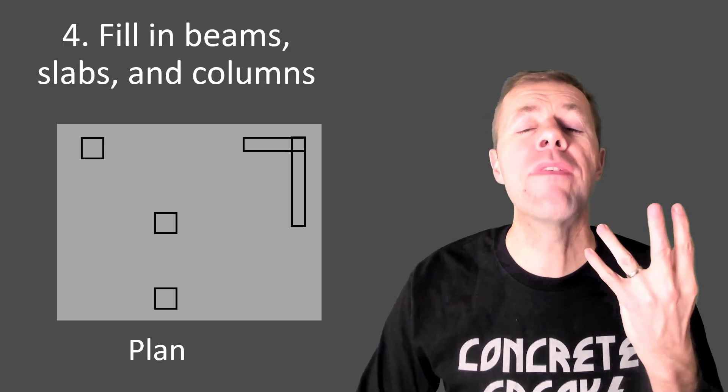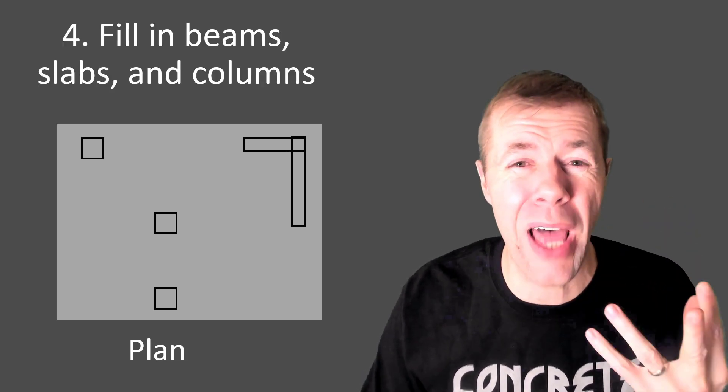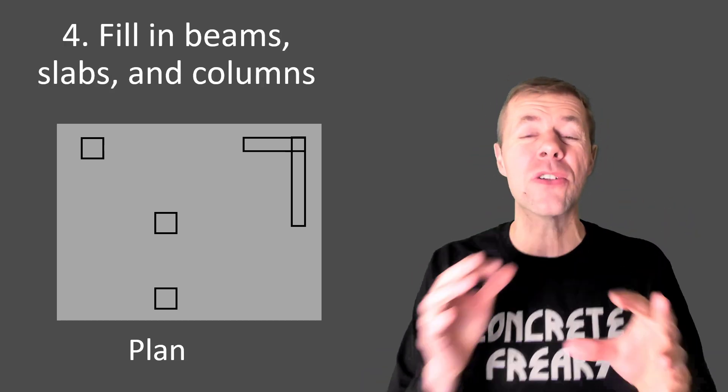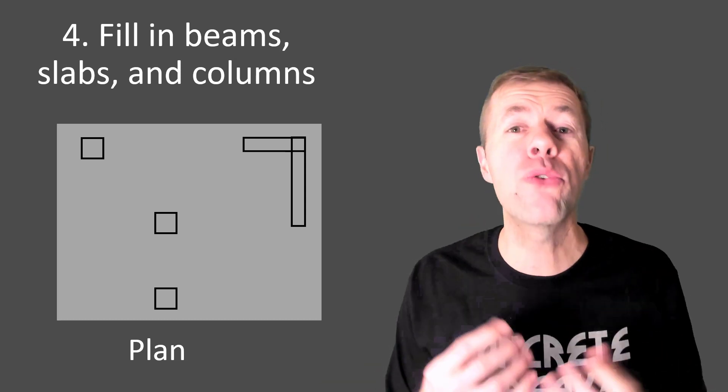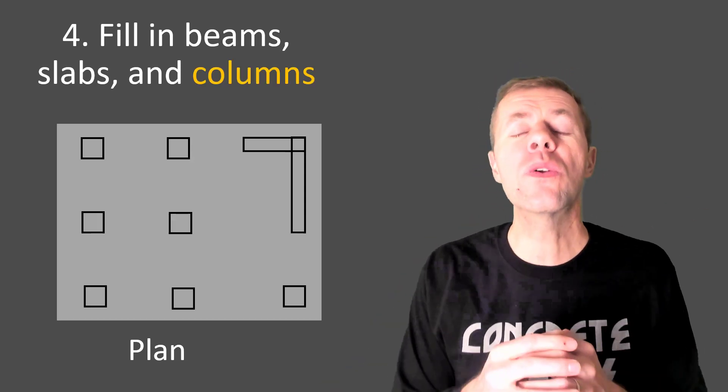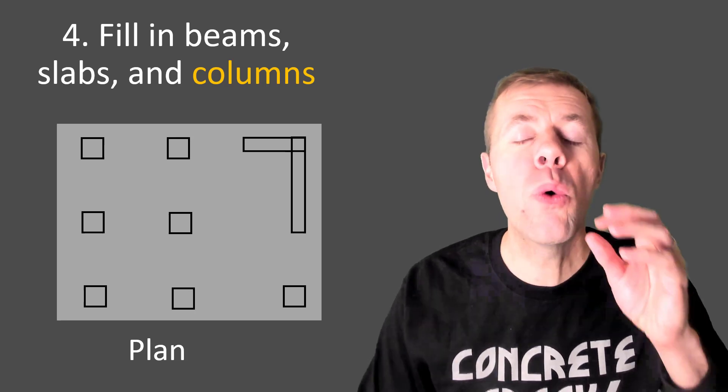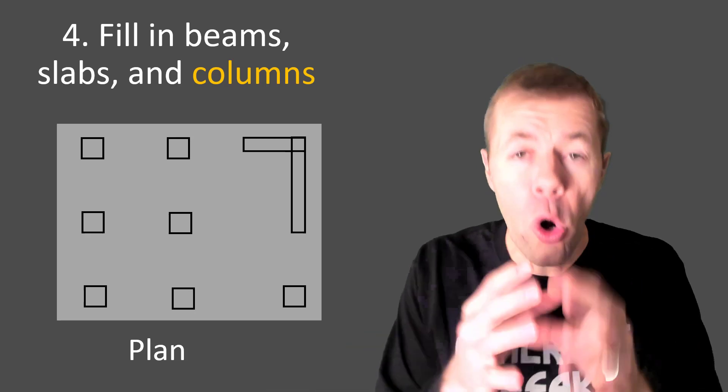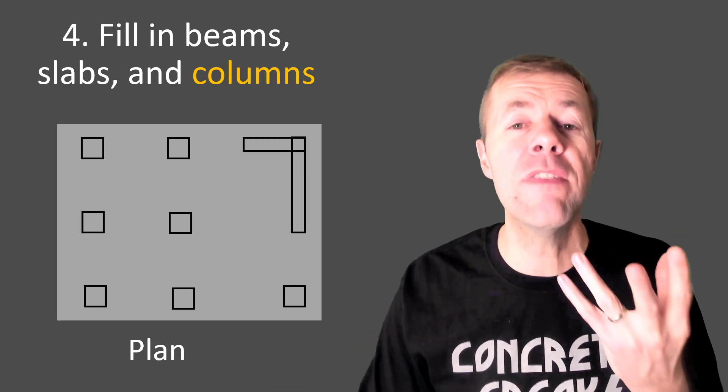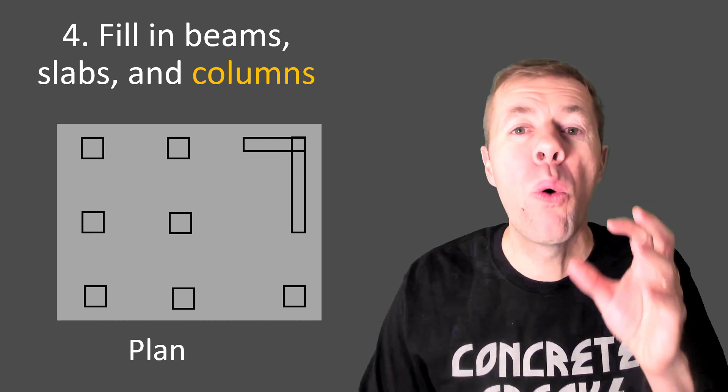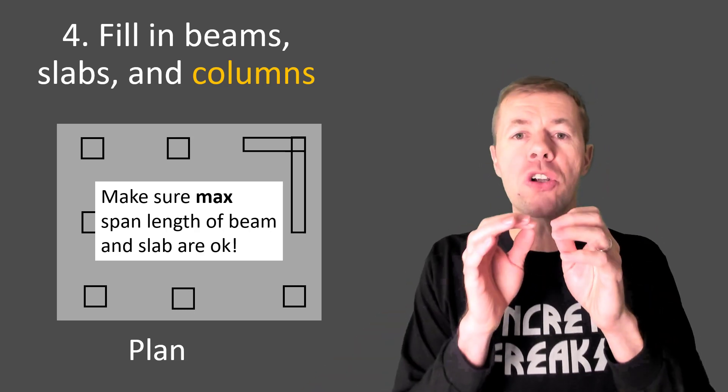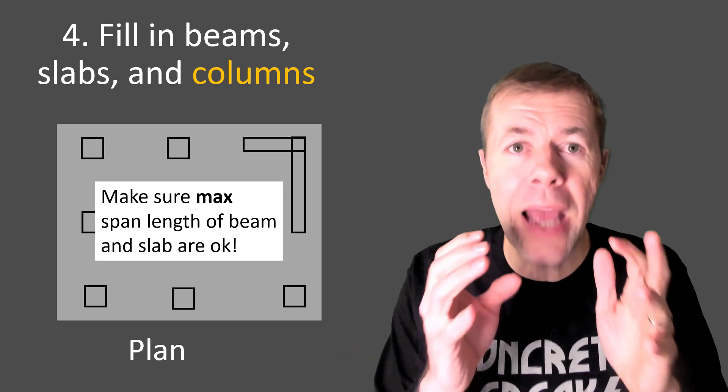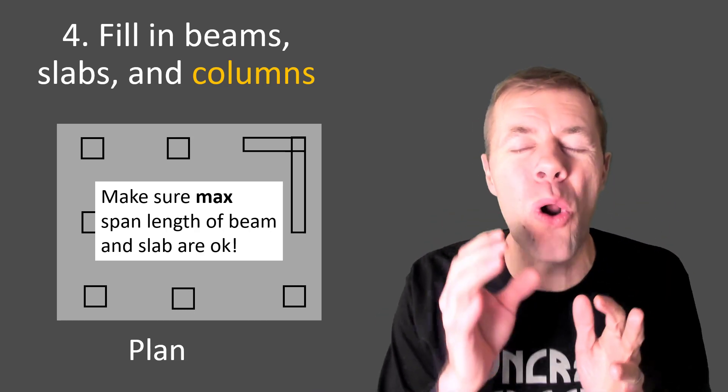Next we have to fill in our beams, slabs, and columns. Now this is much easier said than done but I'll talk you through the theory, the concept. So first let's start out with our columns. You want to place your columns at the right spacing. Already go off what the architect has given you before and place them where it's helpful.